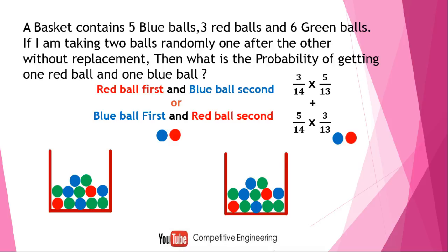The probability of getting a red ball first: there are 14 balls of which 3 are red, so it is 3/14. Then multiply — because it is AND — by the probability of getting a blue ball second. There are 5 blue balls and the total number of balls remaining is 13, because it is without replacement and one ball was already taken. So that term is 5/13.